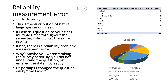However, if we get a different result every time from the same class — say some results show 20 Urdu speakers, some only show two — then there's a problem. It could be that you weren't taking the survey seriously and just randomly answering questions, or you didn't understand the question, or I entered the data incorrectly.